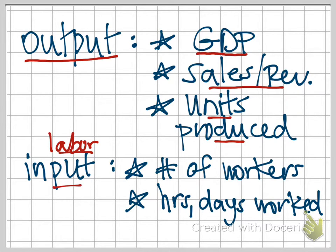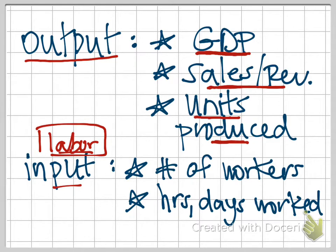When it comes to these two units, we can look at a lot of different things. For output, we can focus on GDP — that total value of everything that was produced — we could use sales and revenue as the measure of output, or we could measure the number of units produced: the number of bottles of wine, the number of tennis shoes. And then focusing specifically on our labor input, we could look at the total number of workers, the number of hours worked, the number of days worked, weeks worked — you could get down to the minute if you wanted to.